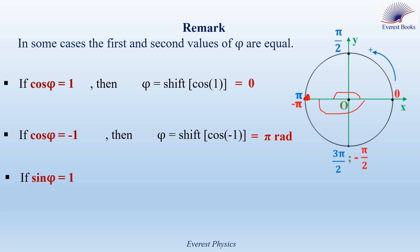If sine phi equals 1, then using the calculator, phi equals shift sine 1, which is equal to pi over 2 radians. According to the previous rule, the second value is obtained by subtracting pi over 2 from pi, giving pi minus pi over 2, which is equal to pi over 2. So we have one value.